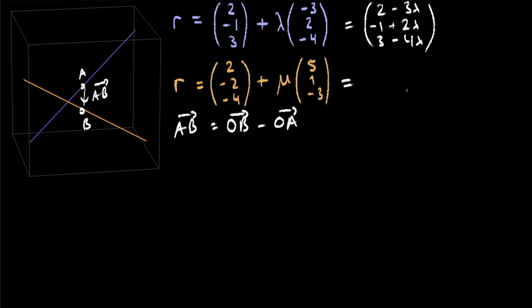And then the second equation here, we'll do the exact same thing. 2 plus 5 mu, minus 2 plus mu, and then minus 4 minus 3 mu.